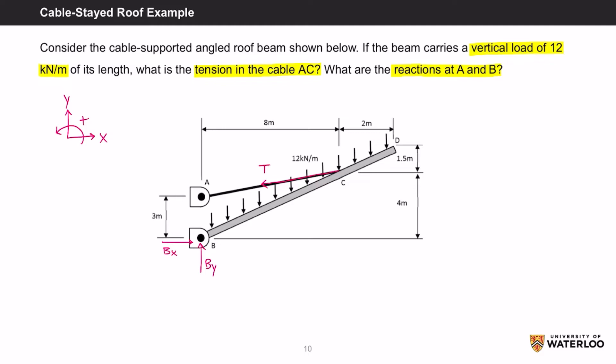We should also turn that distributed load into a point load, which is the force applied 12 kN per meter times the length of the beam L. We can see that the length of the beam is unknown, so we'll have to solve for it using Pythagorean theorem.